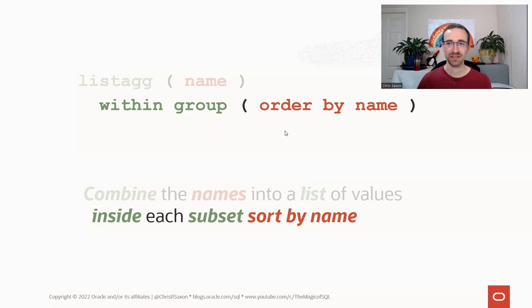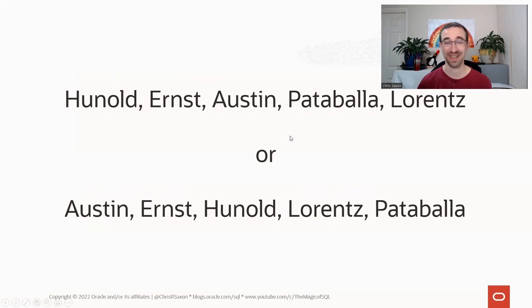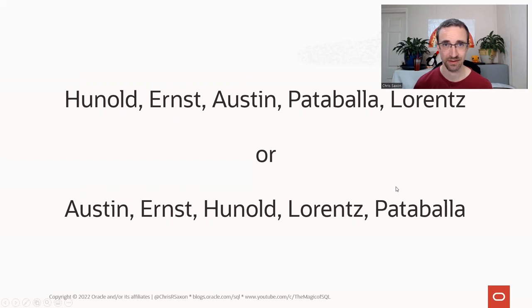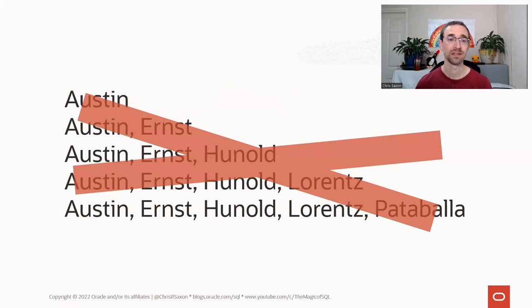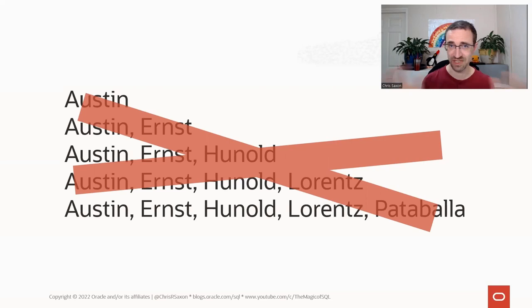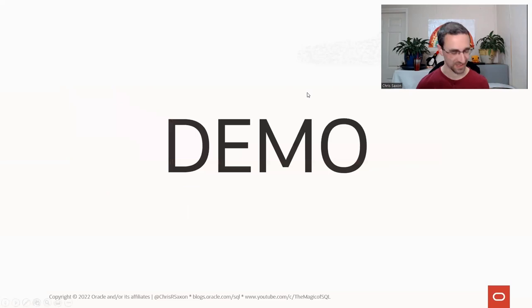One thing that LISTAGG doesn't do is produce a rolling CSV or rolling window — like building up a string and adding each name to the list each time, or computing a sliding window. This is not supported syntax with LISTAGG, so there is no way to do it directly. There are some alternatives which we will come to in the demo.